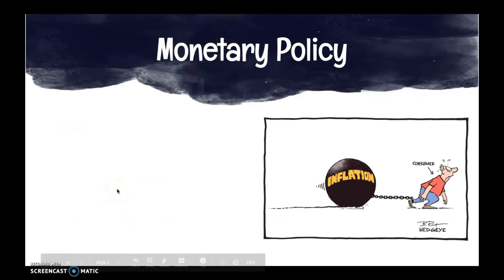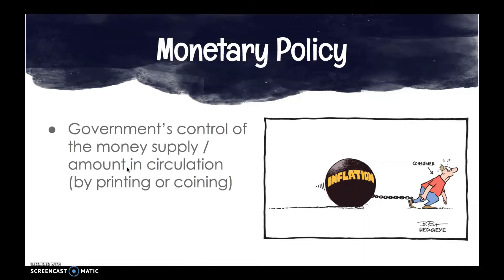Now let's talk about the other type of economic policy: monetary policy. Instead of taxing, borrowing, and spending, monetary policy is about how the government regulates and controls the money supply — the amount of money in circulation — through printing or coining money. The goal is to fight inflation, which happens when there is too much money in circulation, causing the devaluation of the dollar: when the cost of a good or service increases but the value of it doesn't.